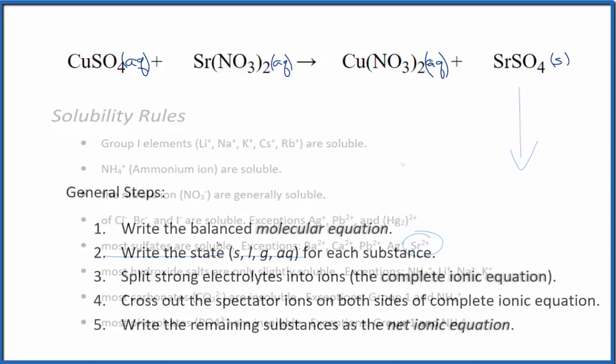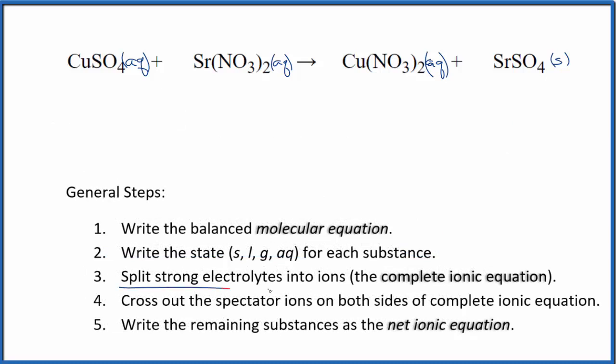So we have our states. Next, we can split the strong electrolytes into their ions, and that gives us the complete ionic equation. Sulfate, the whole thing is 2 minus. That means the copper is 2 plus. So we have our copper(II) ion, Cu²⁺. I won't write the states now. Let's write those at the end. And then I have the sulfate ion, that's SO4²⁻.